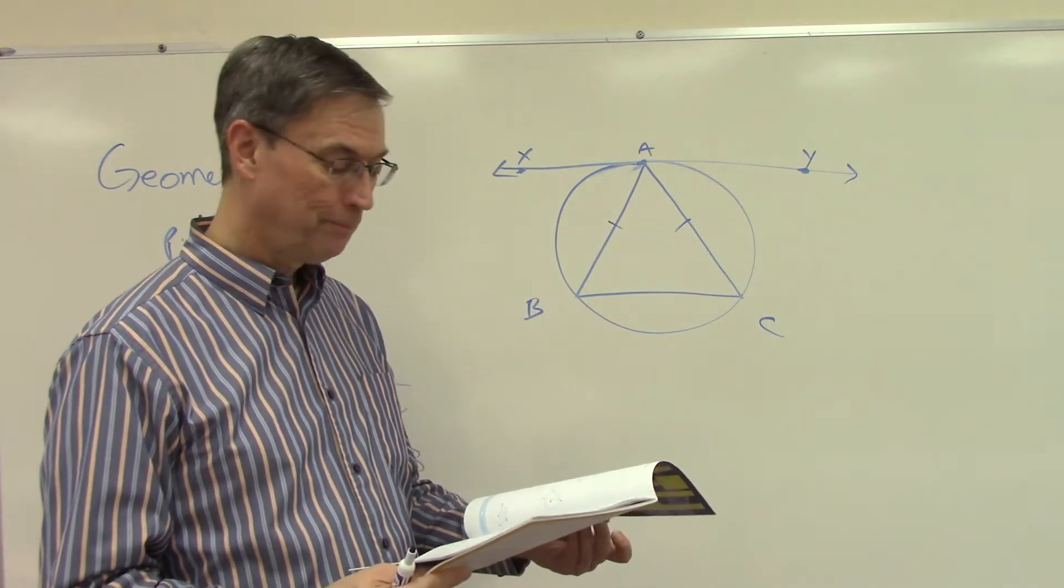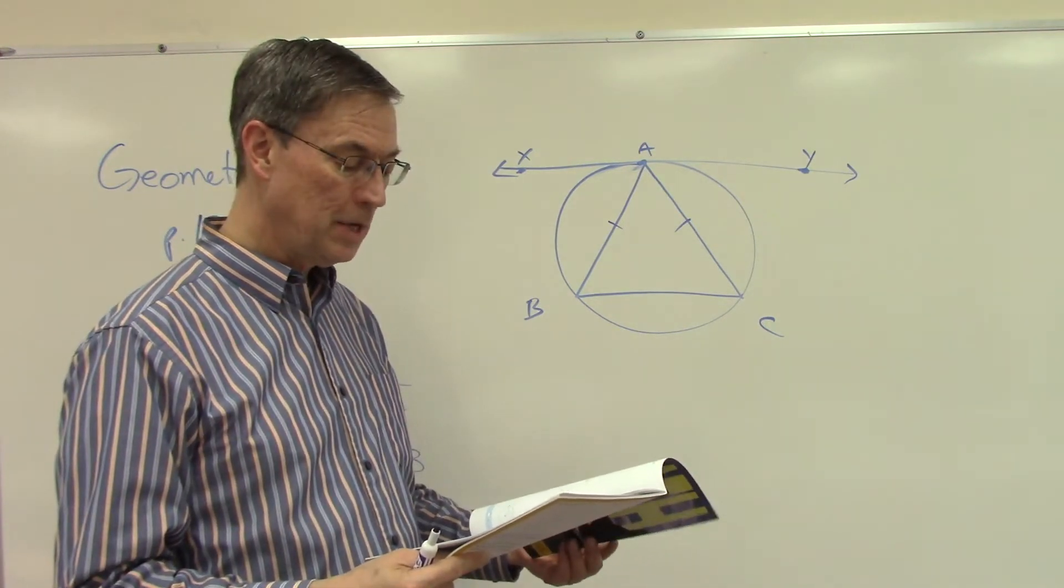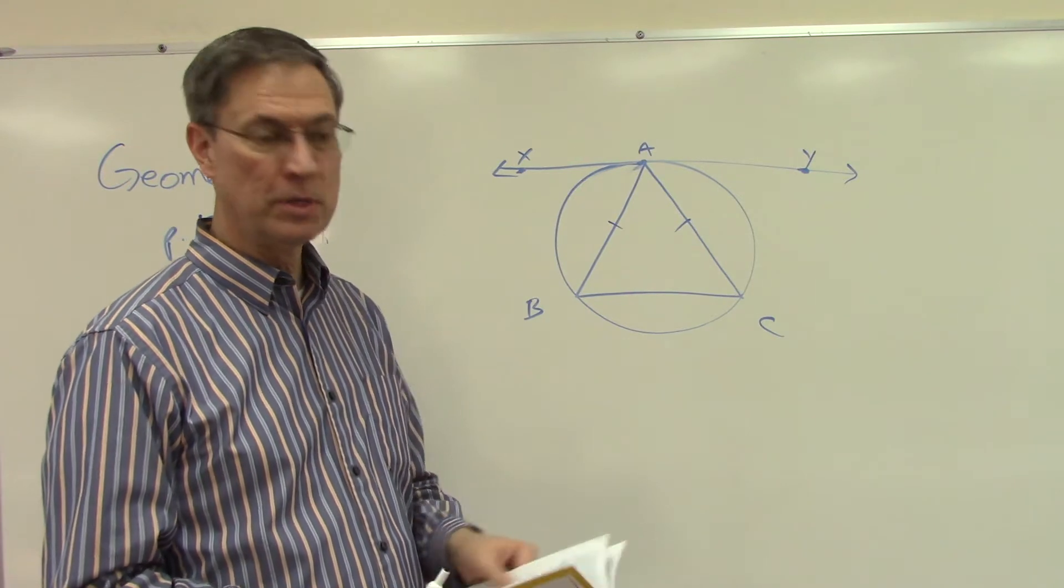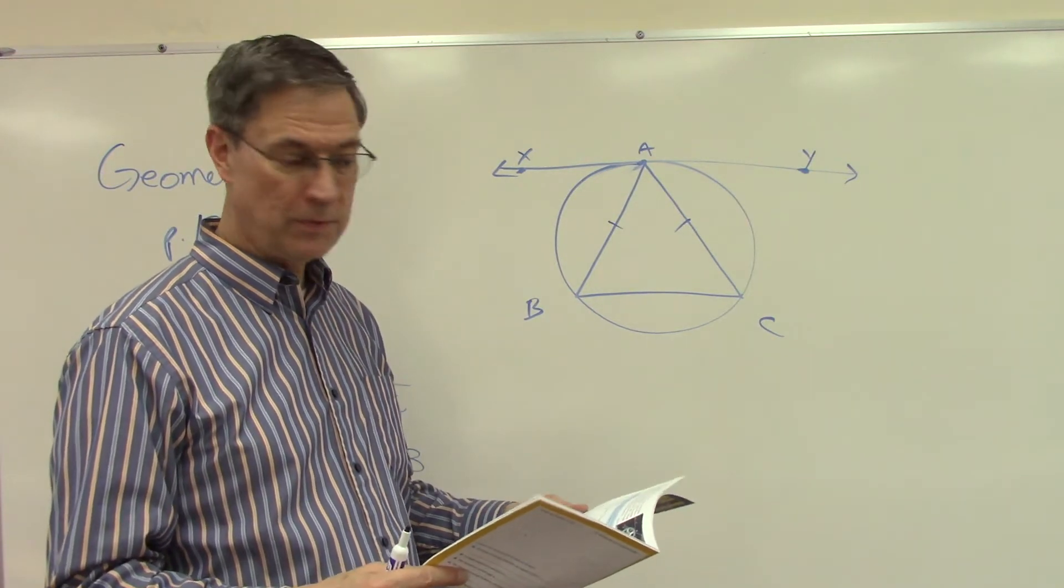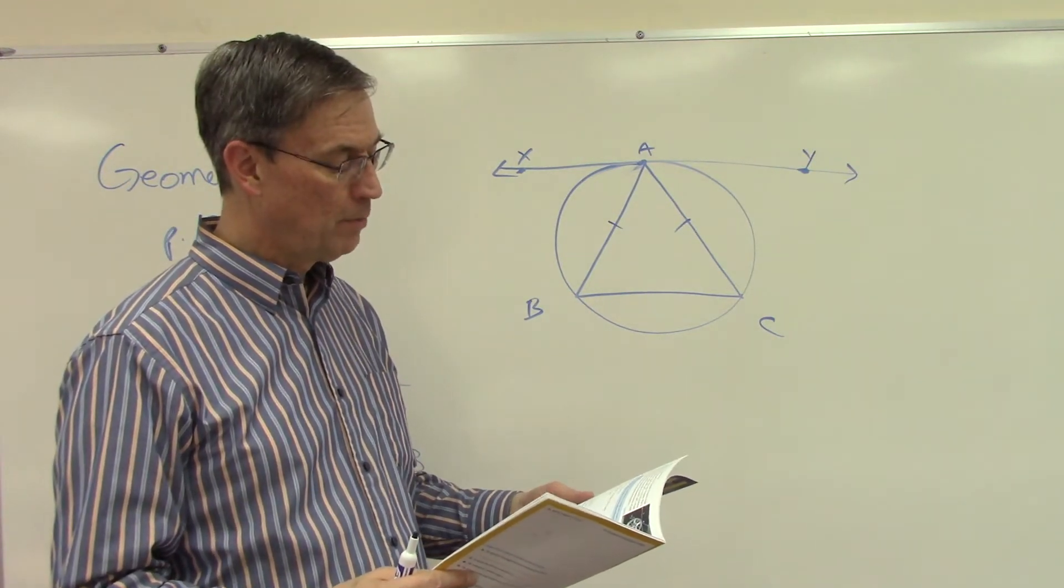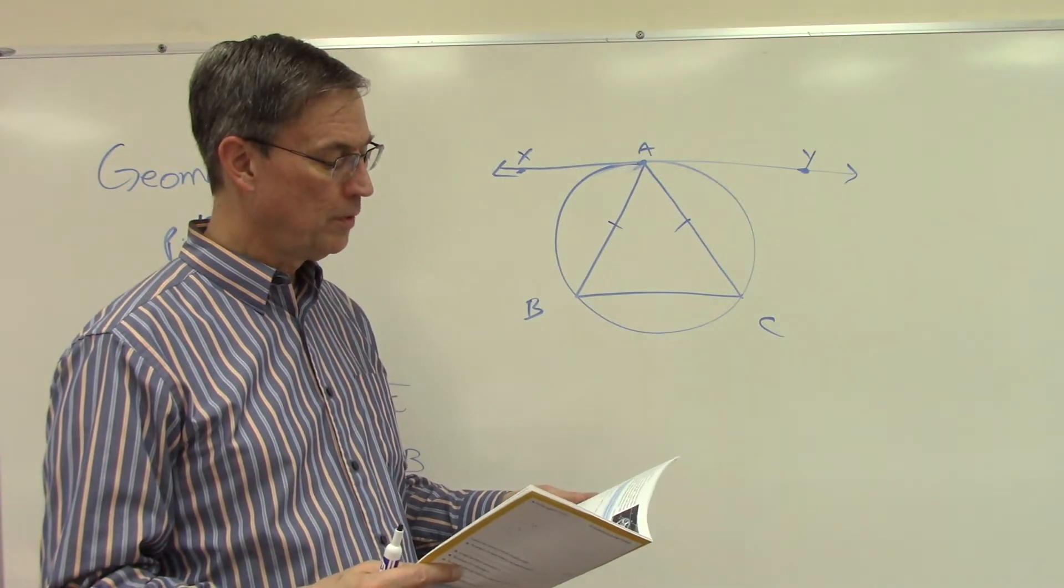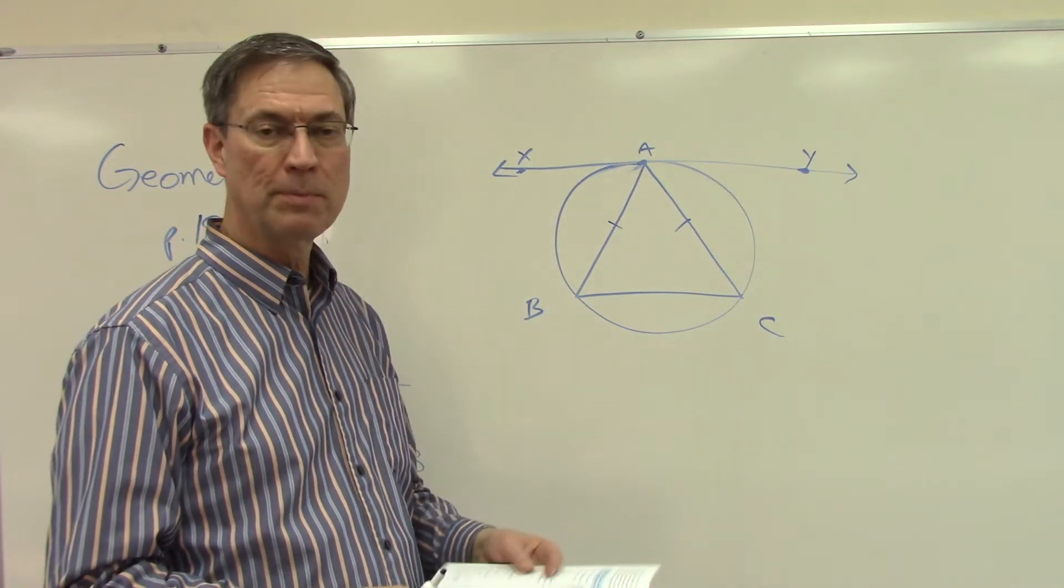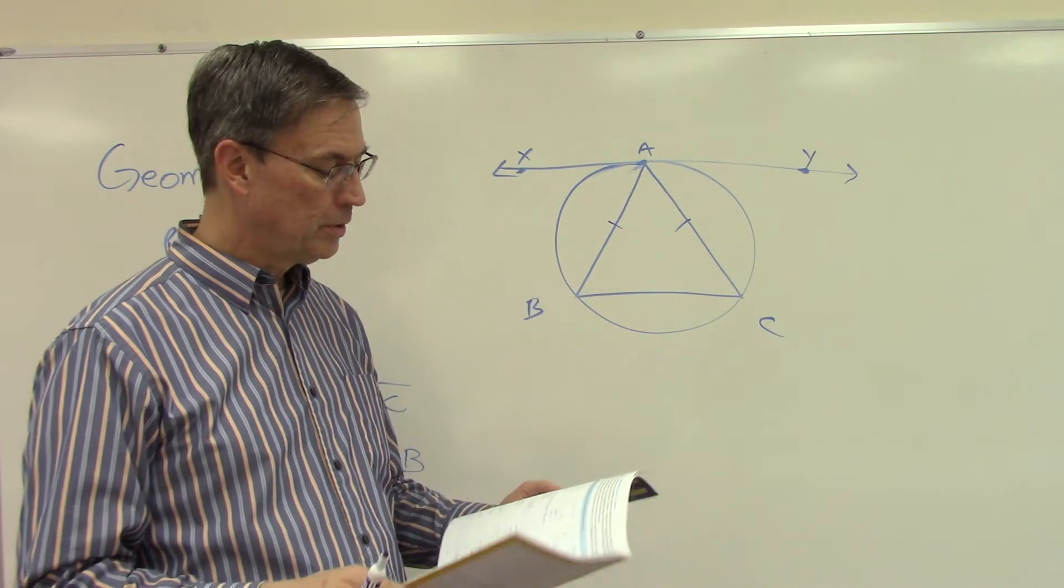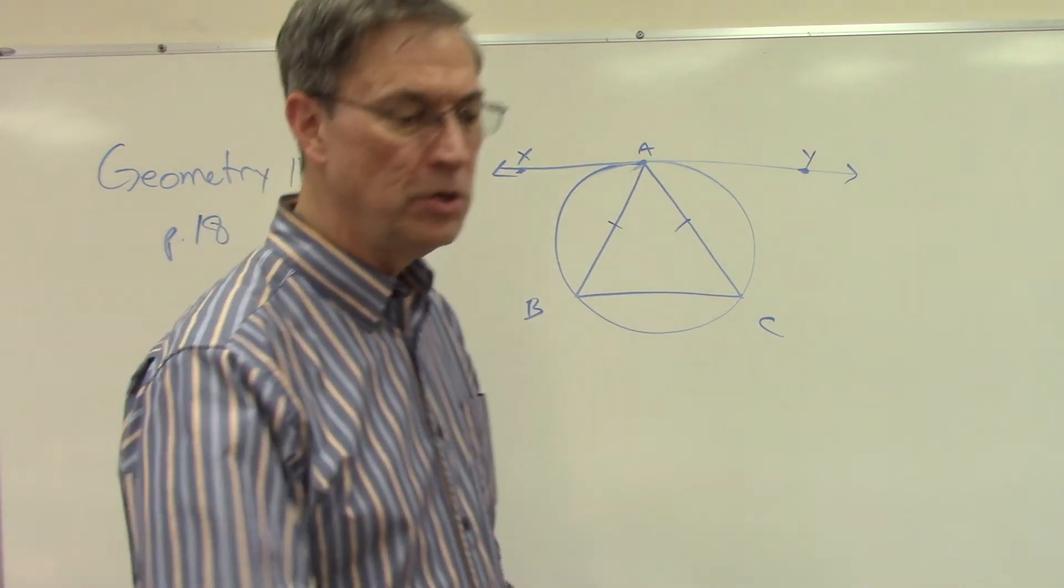Theorem 57: The measure of an inscribed angle is equal to one half the measure of the intercepted arc. And we're going to use theorem 58: The measure of an angle formed by a tangent and a secant drawn from the point of tangency is equal to one half the measure of the intercepted arc. Remember those?